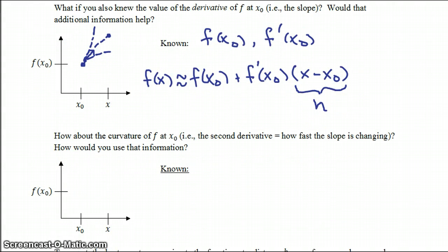In this case, our knowns are f of x0, f prime of x0, and f double prime of x0. We know where we start at, we know what direction we're headed off in, and we know how fast that direction is changing.